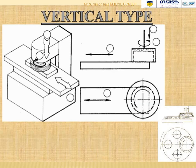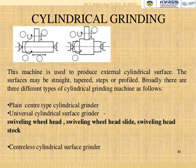In vertical type grinding the entire setup moves in a vertical direction. In horizontal cylindrical grinding, the machine produces external cylindrical surfaces that may be straight, tapered, or profiled. Three types of cylindrical grinding machines exist: plain center type cylindrical grinder; universal cylindrical grinder with swiveling wheel head, swiveling wheel head slide, and swiveling headstock; and centerless cylindrical surface grinder.